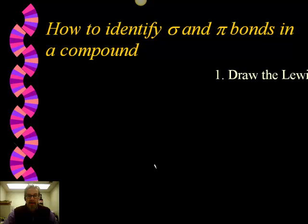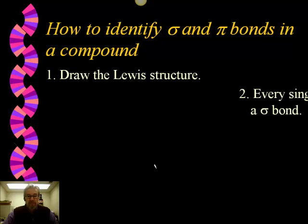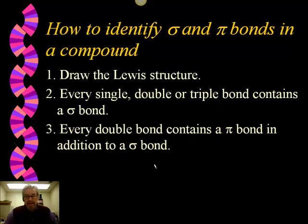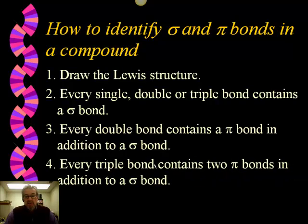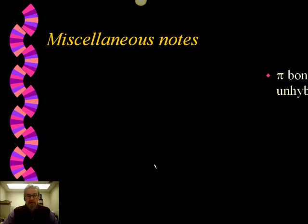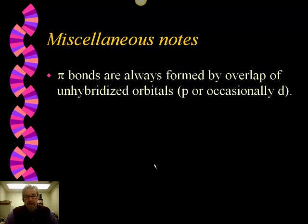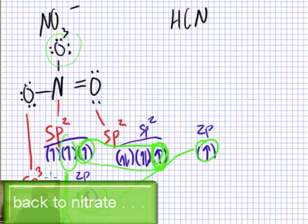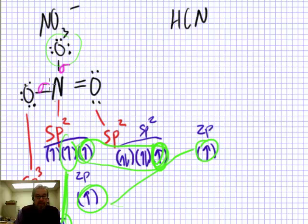The other type of AP exam question is identifying sigma and pi bonds in a compound. Draw the Lewis structure first. Every bond contains one sigma bond. A single bond is just a sigma bond; a double bond is one sigma plus one pi; a triple bond is one sigma plus two pi bonds. Pi bonds are always formed by overlap of unhybridized orbitals — usually unhybridized p orbitals. Lone pairs are always found in hybrid orbitals.